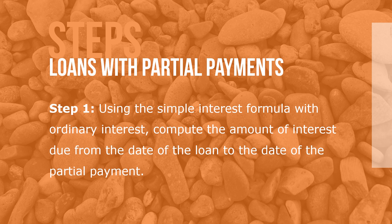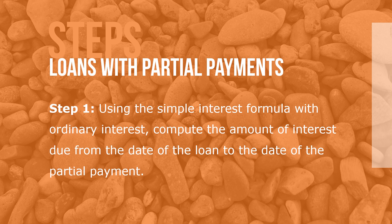Here are the steps for calculating loans with partial payments. Step 1: Using the simple interest formula with ordinary interest, compute the amount of interest due from the date of the loan to the date of the partial payment. Step 2: Subtract the interest from Step 1 from the partial payment.